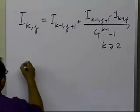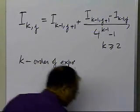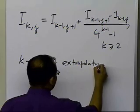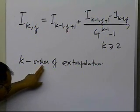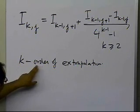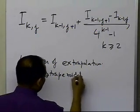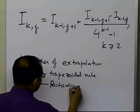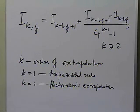In this formula, k represents the order of extrapolation. k equals 1 corresponds to the trapezoidal rule, and k equals 2 corresponds to Richardson's extrapolation formula, and so on. That's how you figure out what k represents.